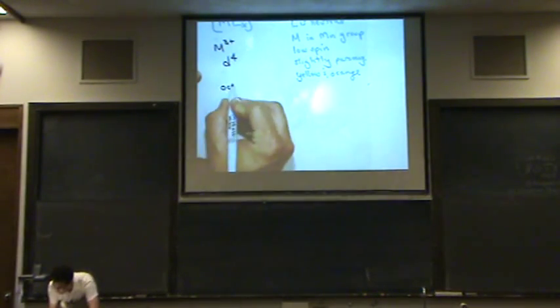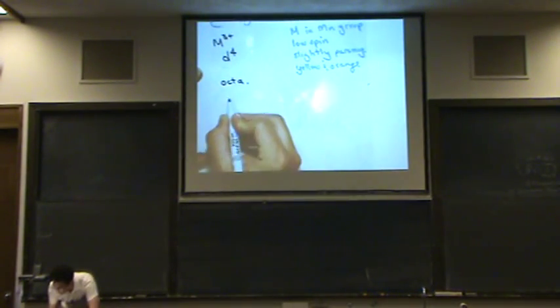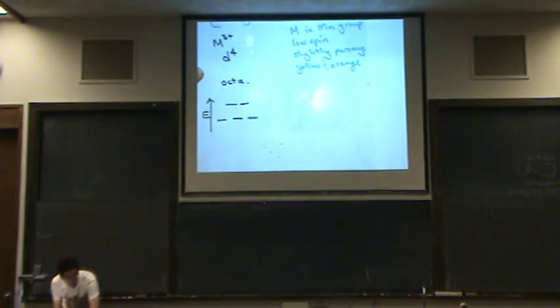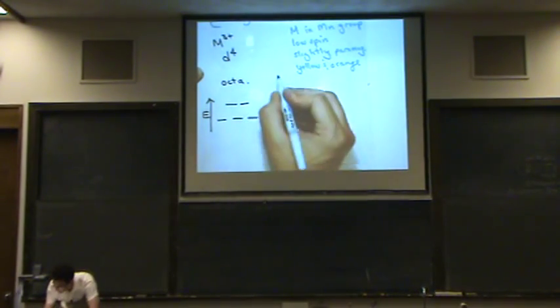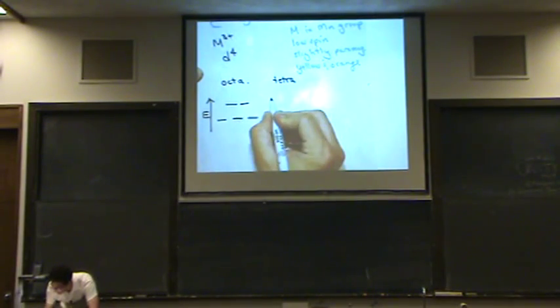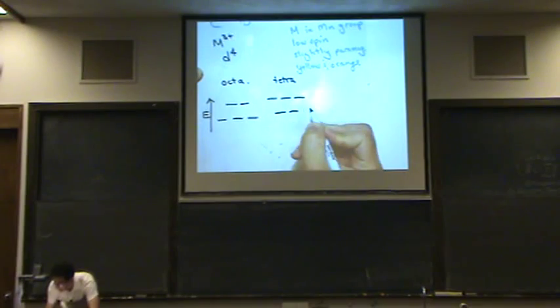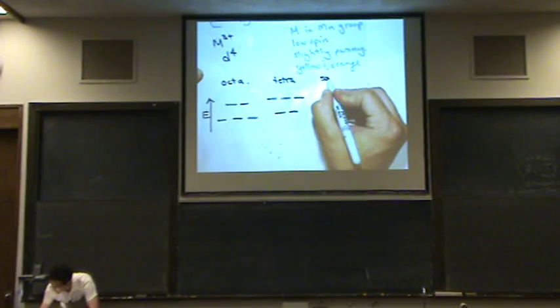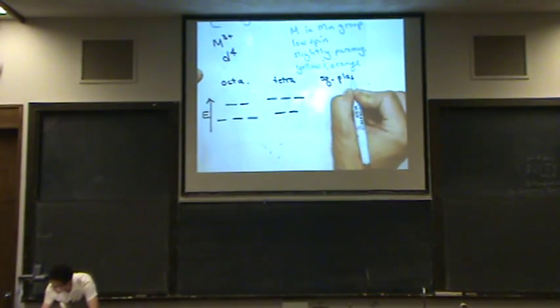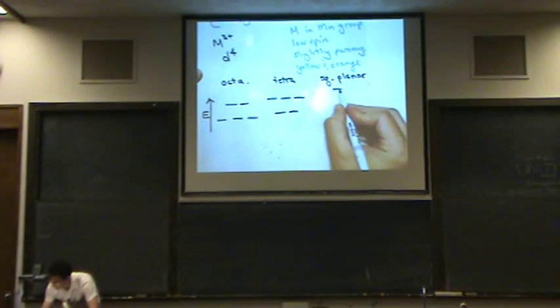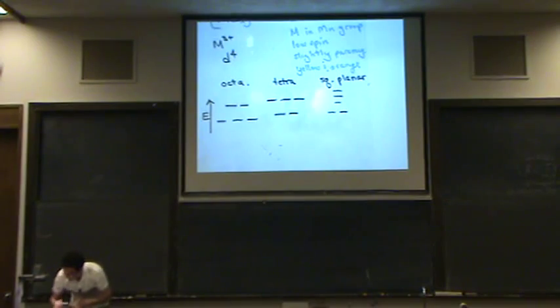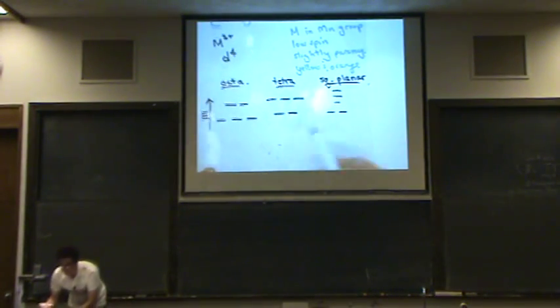If it is octahedral, then the CFT diagram would look like this. Two on top, three on the bottom. If it's tetrahedral, the CFT diagram looks exactly the opposite. Three on top, two on the bottom. And if it's square planar, this is the one where it looks like the Eiffel Tower. One, two, three. So we've got these three possibilities to choose from.